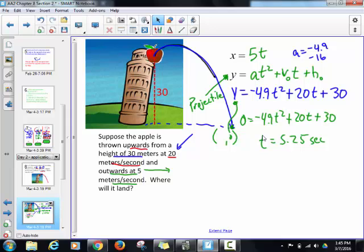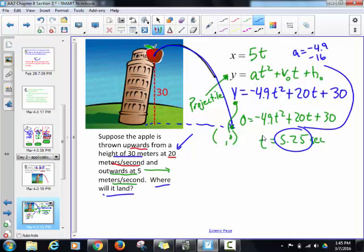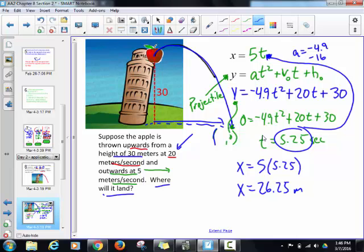But that's not what I want to know. I want to know where will it land. So what do I need to do with that 5.25? Yep, that's got to get plugged into my horizontal parameter up here because that's going to tell me how far away from that building it lands. So I'm going to take 5 times 5.25. And we get 26.25 meters. There we go.